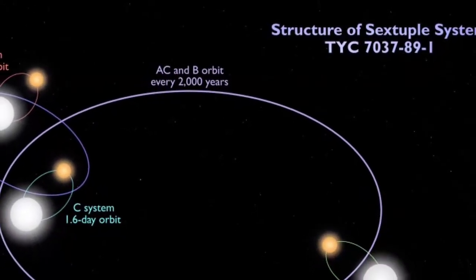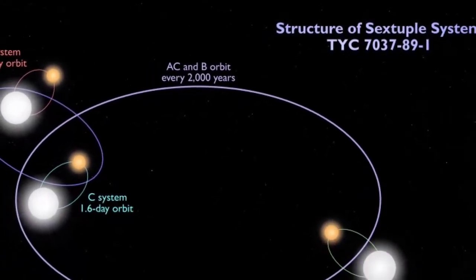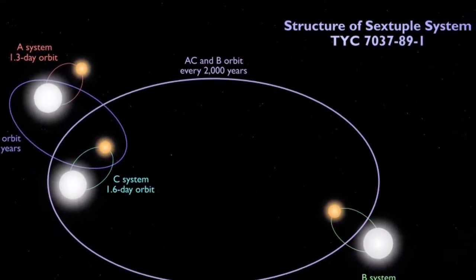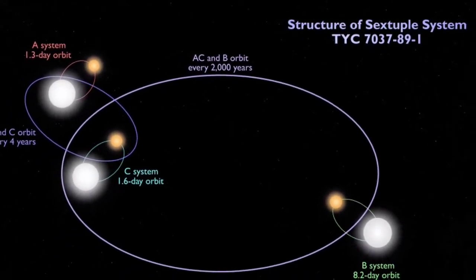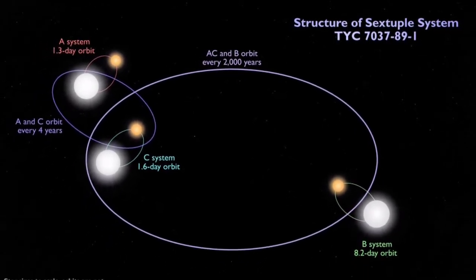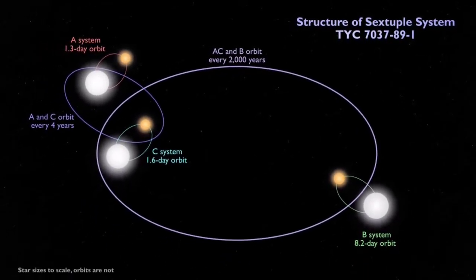TYC 7037-89-1 is the first six-star system ever found where all of the stars participate in eclipses, a discovery made by NASA's Transiting Exoplanet Survey Satellite.